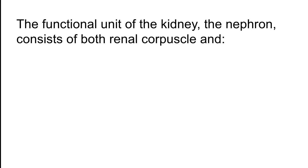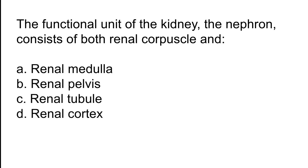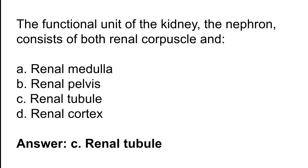The functional unit of the kidney, the nephron, consists of both which two structures? Options: A) Renal corpuscle and renal medulla, B) Renal pelvis, C) Renal corpuscle and renal tubule, D) Renal cortex. The correct answer is option C. The nephron consists of both the renal corpuscle and renal tubule.